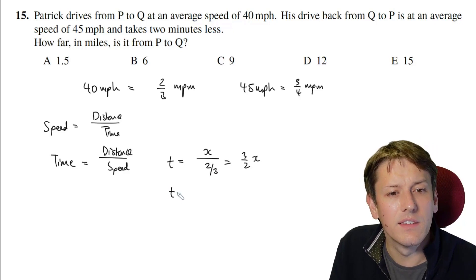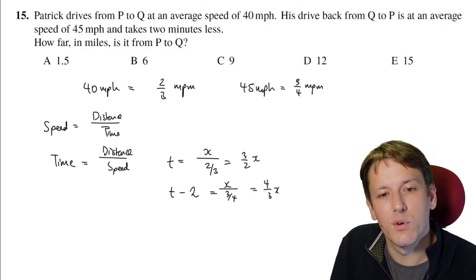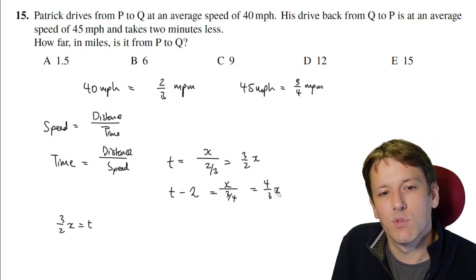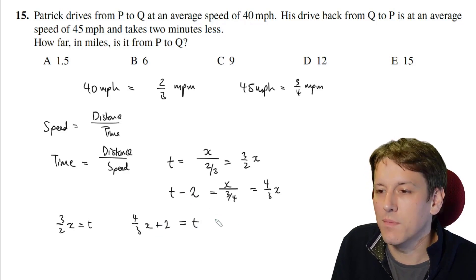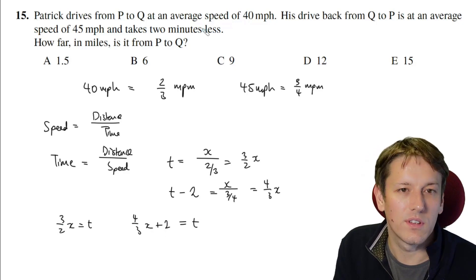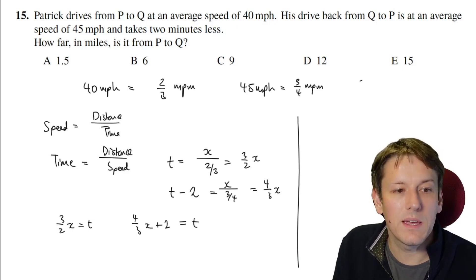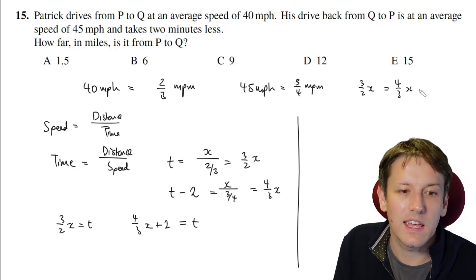And on the way back, the time is going to be t minus two, that's x divided by three quarters distance over time, which is four thirds x. So on the one hand, I've got three over two x is equal to the time. And if I rearrange this one, I've got four over three x plus two is the time. So these are both expressions for the time t that he takes to go on the first leg of the journey. So if I just set these equal to each other, I've got three over two x is equal to four thirds x plus two.